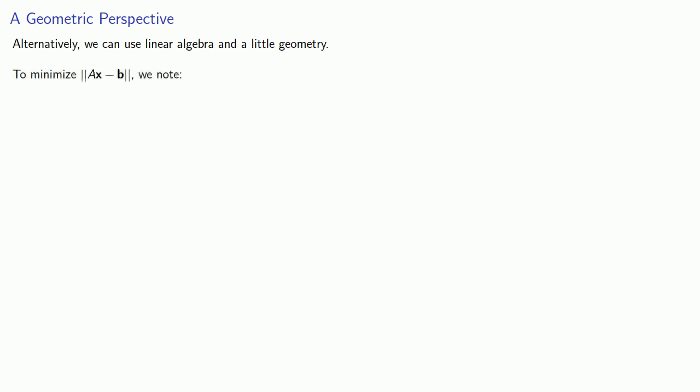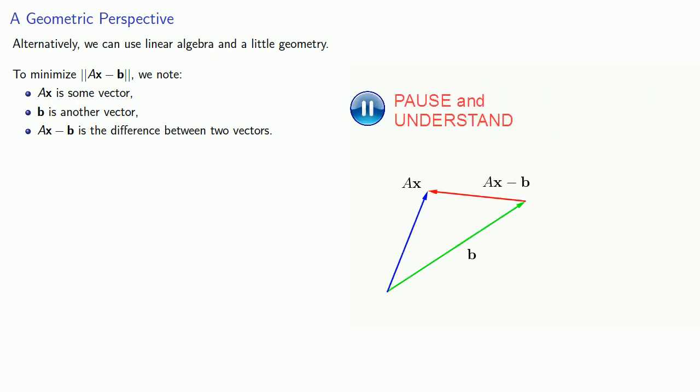So to minimize this norm of Ax minus b, we might note the following. Ax is some vector, b is another vector, and Ax minus b is the difference between two vectors. And if we look at this geometrically, this vector Ax minus b is the vector that joins b to Ax. And we want to make the length of this vector as short as possible.